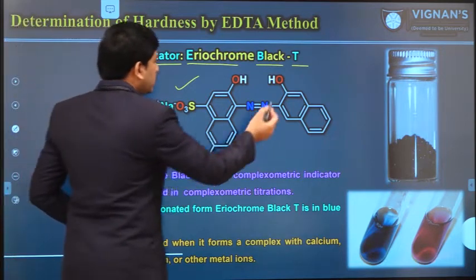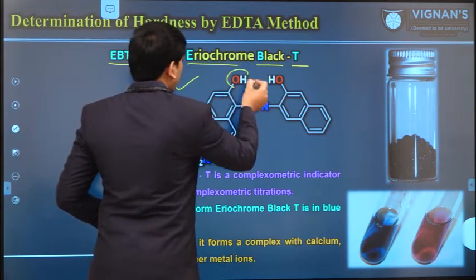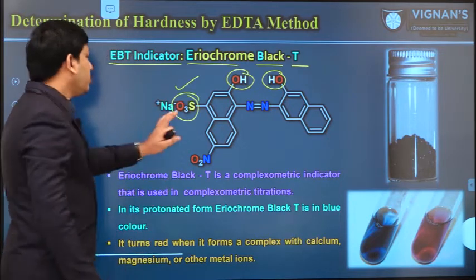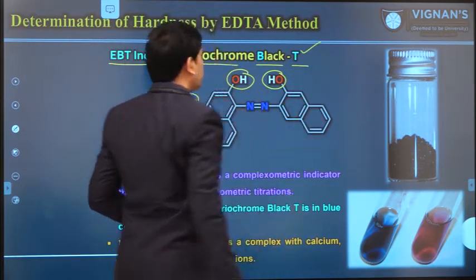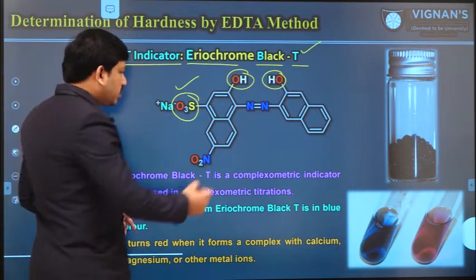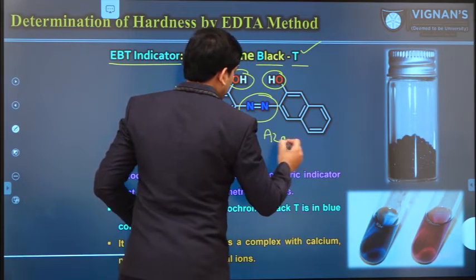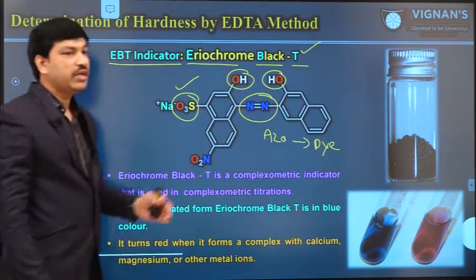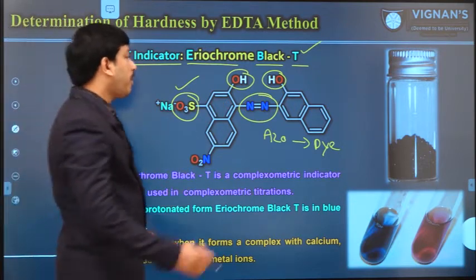EBT is a tribasic acid compound because it contains three acidic groups — two OH groups and another acid group. Due to these three groups it is a tribasic acid, and that is the reason we name it with 'T'. Eriochrome Black T: T indicates a tribasic compound. This is one of the azo-dye compounds — if you see its structure it contains an azo group, meaning it is one of the dye-type compounds. Dyes always have a particular color; similarly, this compound has different colors depending on the pH value.